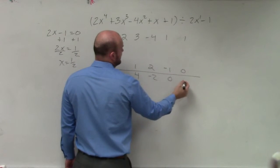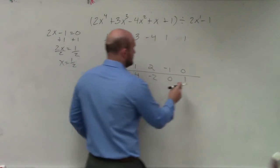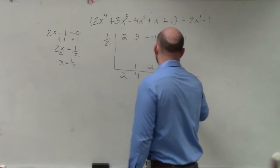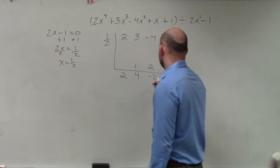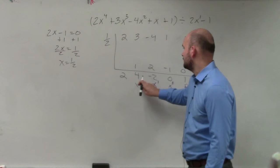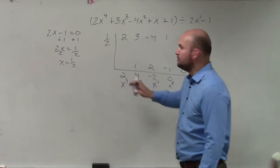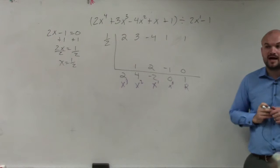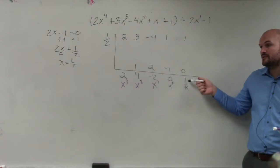1 plus 0 is 1. So therefore, you have remainder, constant, linear, quadratic, and cubic. So now you write your polynomial, but now we have a remainder.